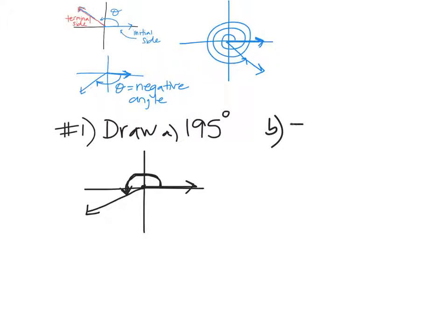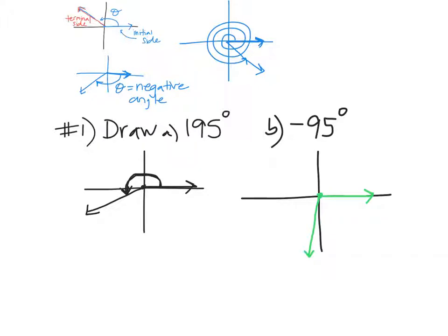Let's do negative 95 degrees. Once again, we're going to start on the positive x-axis. And this time we're going to go the other direction because it's negative. Negative 95 degrees is going to be just 5 degrees past 90, so it's going to be pretty close to 90. You have to draw your arrow going that way to show that it's negative.